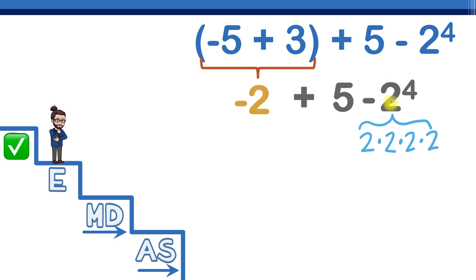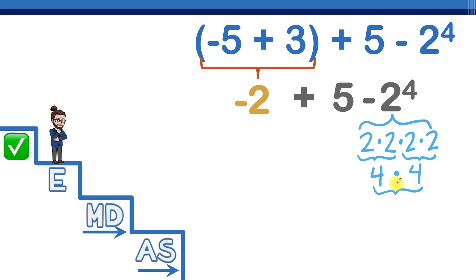We're taking the base two and multiplying it by itself four times. Two times two is four, and two times two is also four, which gives us four times four, and four times four equals sixteen. So we replace two to the fourth with sixteen.